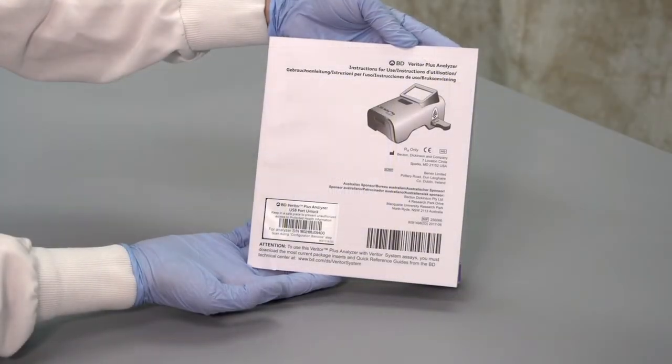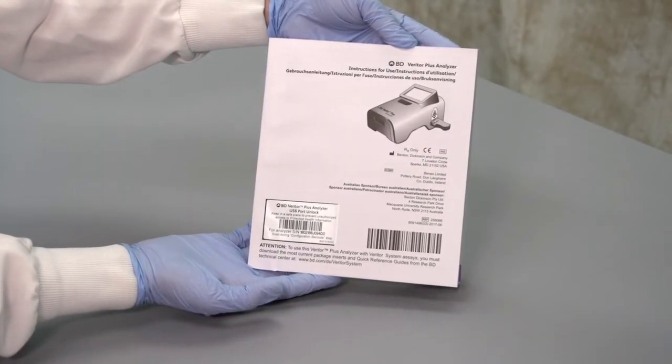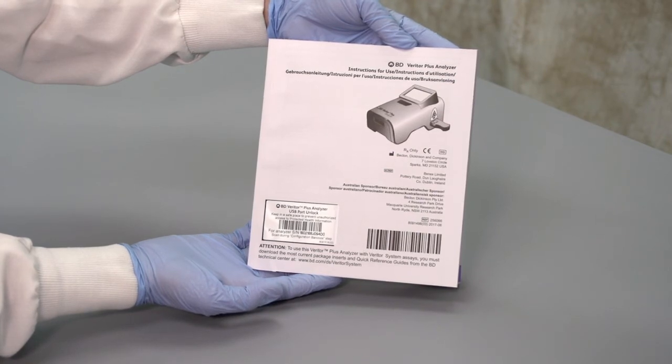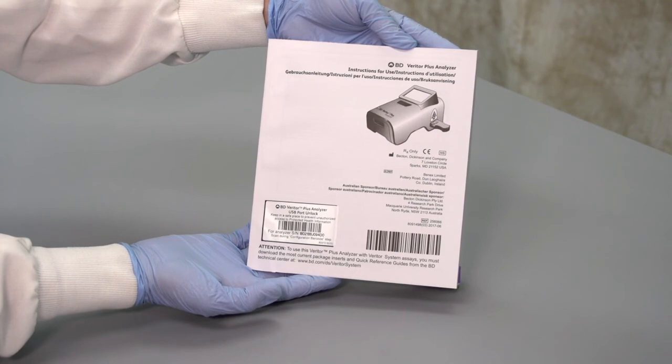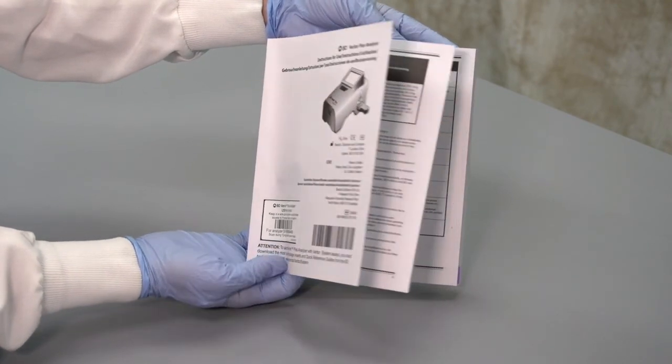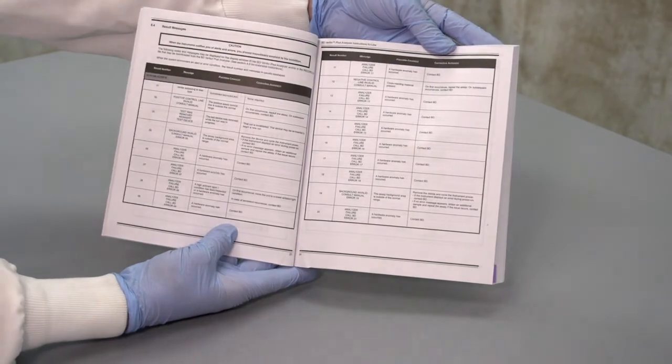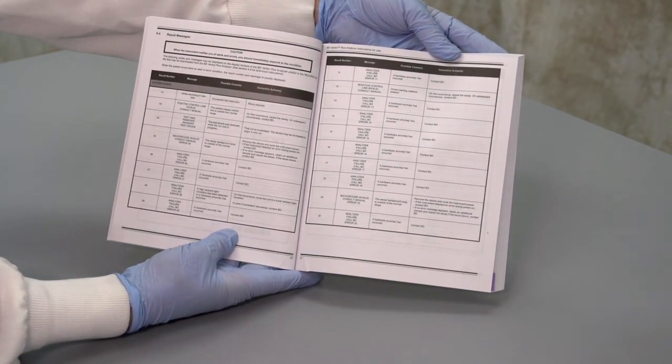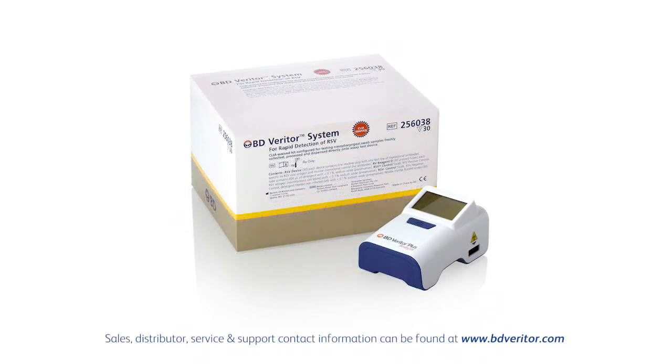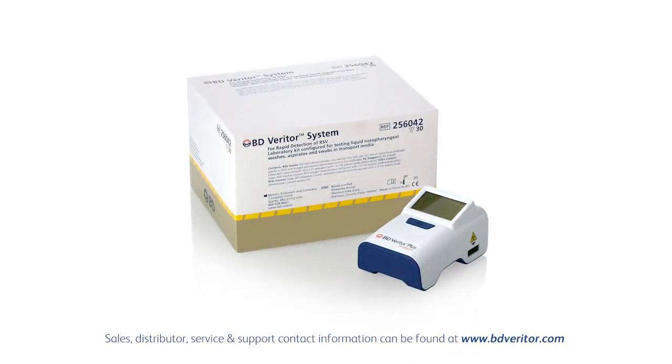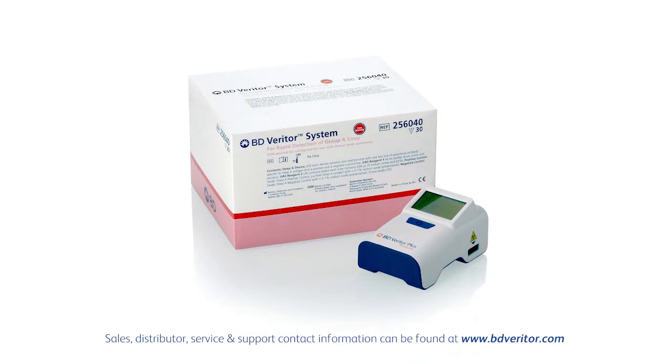The BD Veritor Plus analyzer is easy to maintain and troubleshoot. It comes with an instrument lifetime warranty: 3,500 tests or 2 years usage, whichever comes first, and is supported by BD Global Technical Service and Support. Please refer to the Instructions for Use booklet for additional information or troubleshooting guidance.